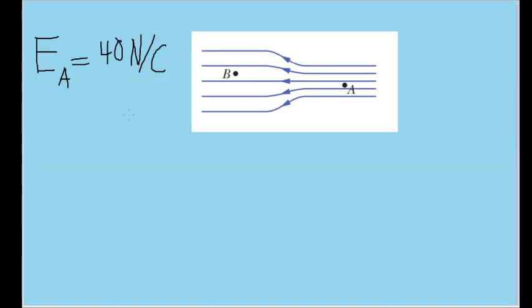In this problem, we have a diagram of some electric field lines and two points within that field. We are told that the electric field lines on the left side of this diagram have twice the separation of the lines on the right. We're also told that the magnitude of the electric field at point A is 40 newtons per coulomb.